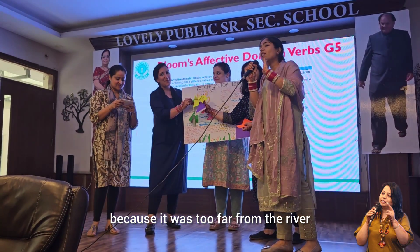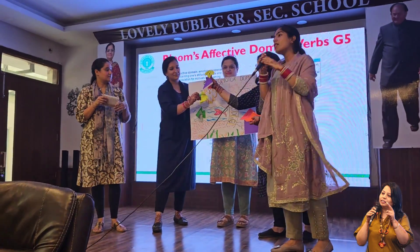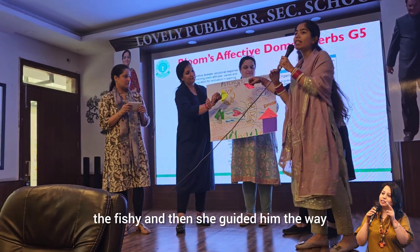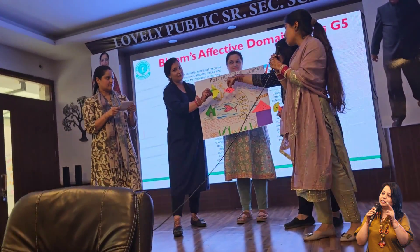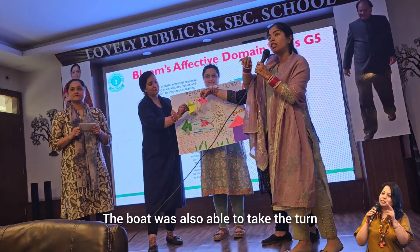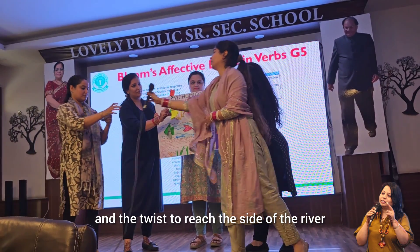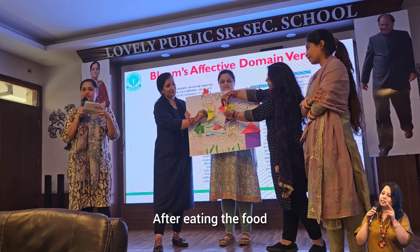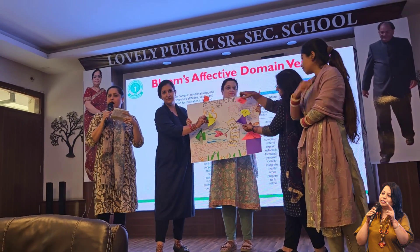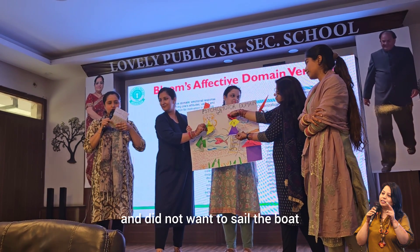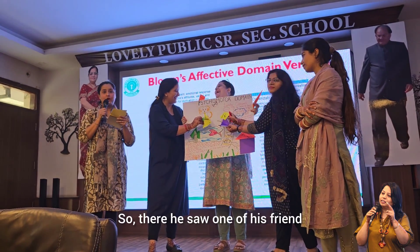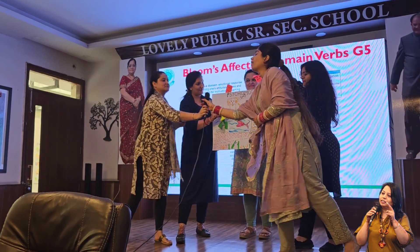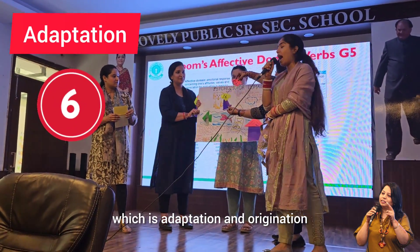Then his friend came and he decided to take help from Fishy. She guided him the way to reach the river, and the boat was also able to take the turns and twists to reach the other side. He reached the other side following her instructions and ate yummy food. After eating, he was thinking how to go back as he was very tired and did not want to sail the boat. There he saw one of his friends going to the same place. The next skill set is adaptation and origination.